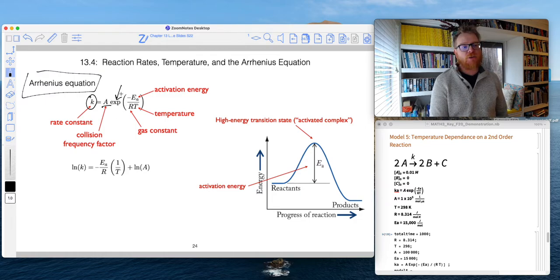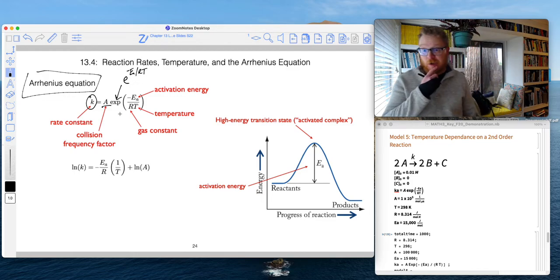So the exponential, that's my shorthand notation for E. So natural number E. So when I write exponential of negative EA divided by RT, that's the same thing as saying E raised to the power negative EA over RT. So that's what all of that stuff means.